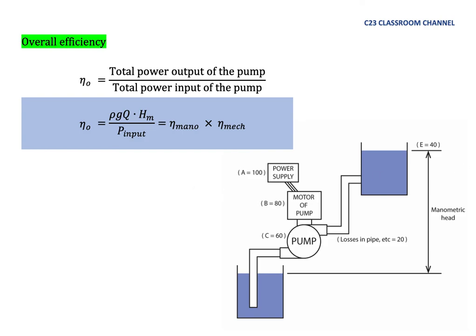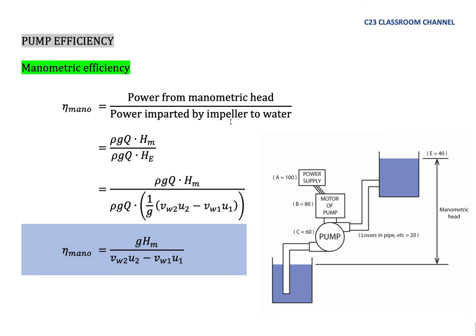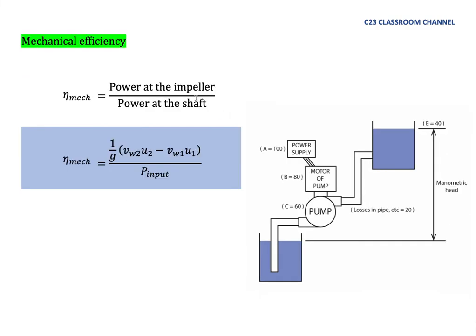Please remember all three efficiency equations and be careful about their definitions. The most common mistake students make is not knowing when to use power at the impeller as the input versus the output. The best way to remember is to draw a diagram like this, which lets you identify which efficiency you are studying and clearly determine which quantity is the input and which is the output.